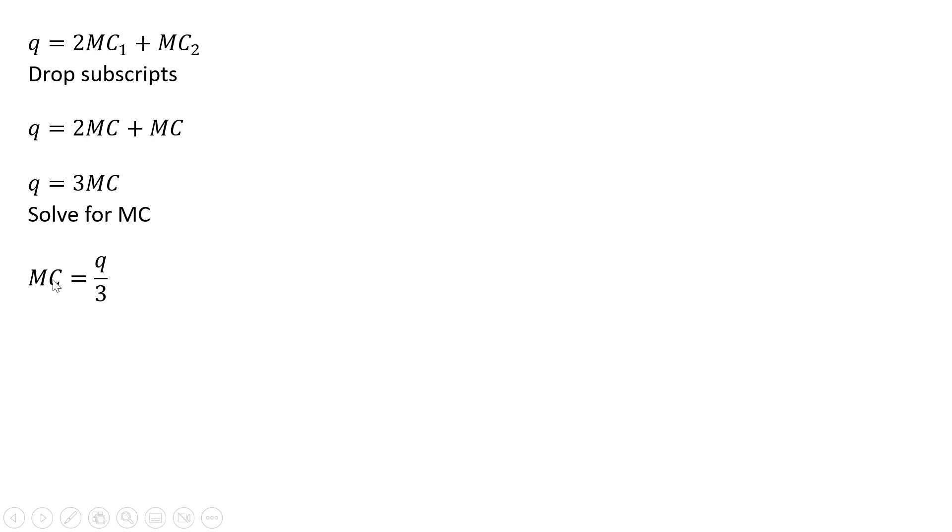We're going to solve for marginal cost, and now we have the company-wide marginal cost equation. Next step is to get marginal revenue. We take the price equation, and a shortcut method is that marginal revenue equals the inverse market demand with a slope that is twice as steep. So instead of minus one-third Q, it's going to be minus two-thirds Q.